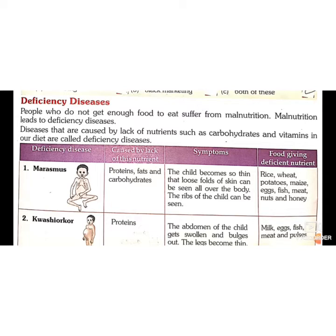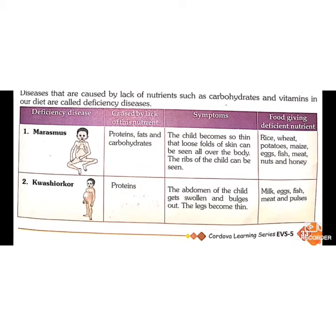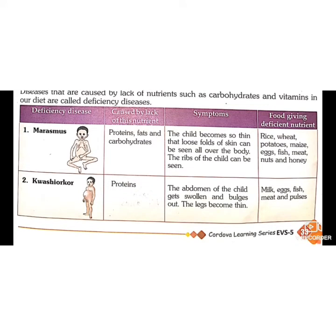People who suffer from malnutrition do not get enough food because they don't have money to purchase food at high prices. These diseases are caused in them and are called deficiency diseases. Here is a table of some deficiency diseases, the nutrients whose deficiency causes them, their symptoms, and foods that provide the deficient nutrients.